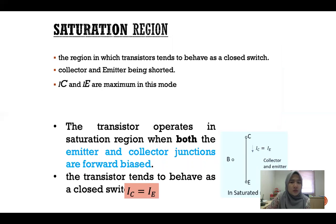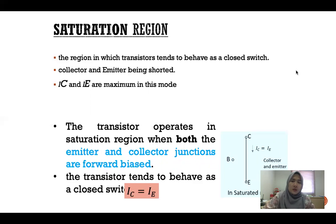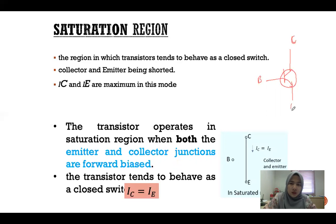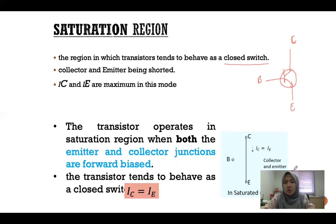Next, let's look at the saturation region. The saturation region is the region from 0 to 0.7V — the transistor tends to behave like a closed switch. In the active region the transistor is shown normally, but in the saturation region the transistor will become like a closed switch.